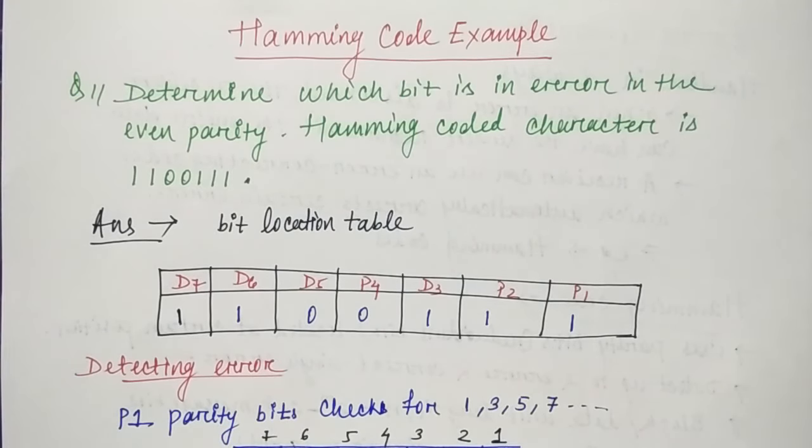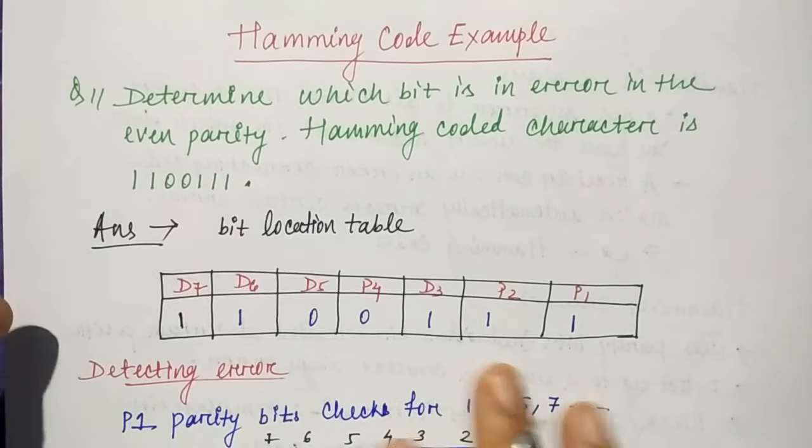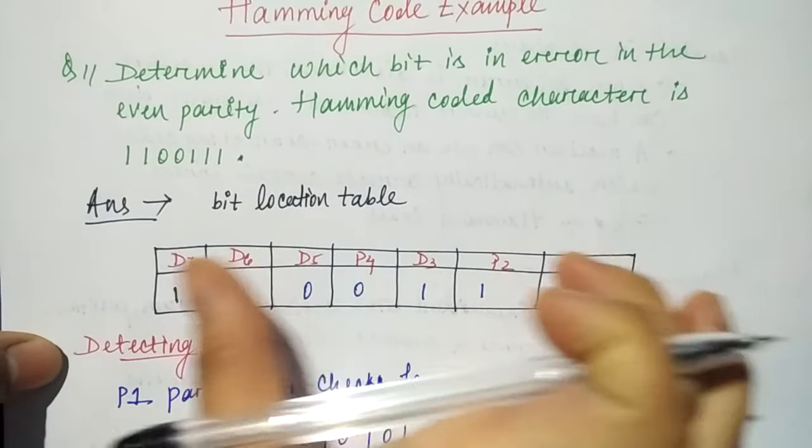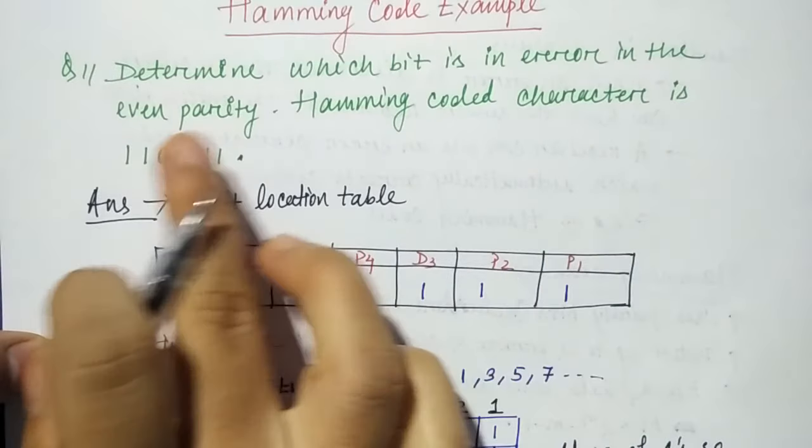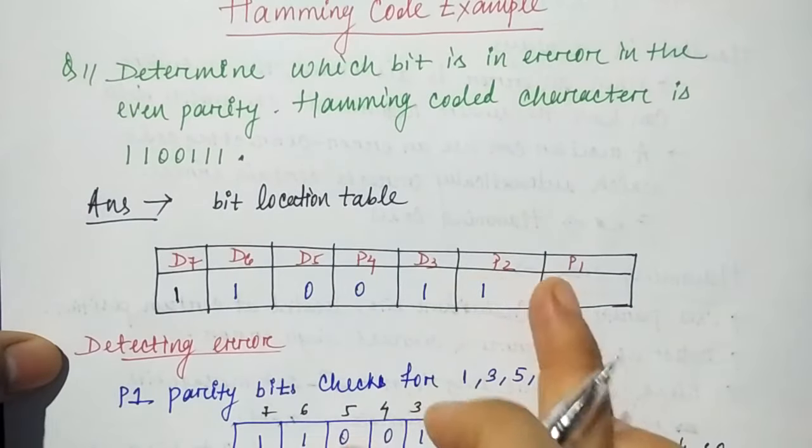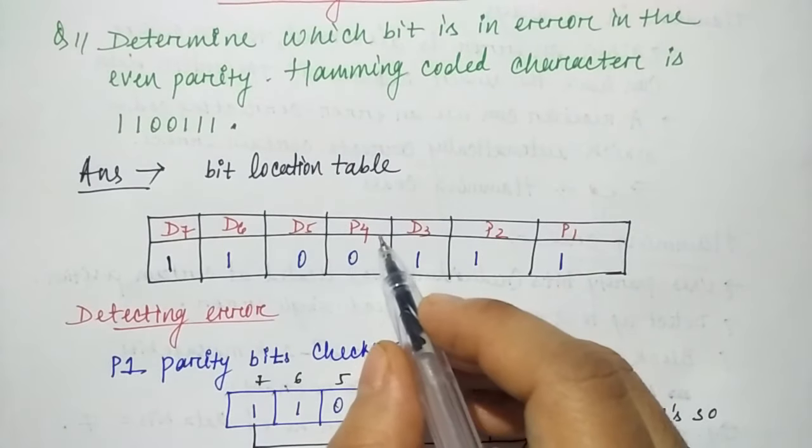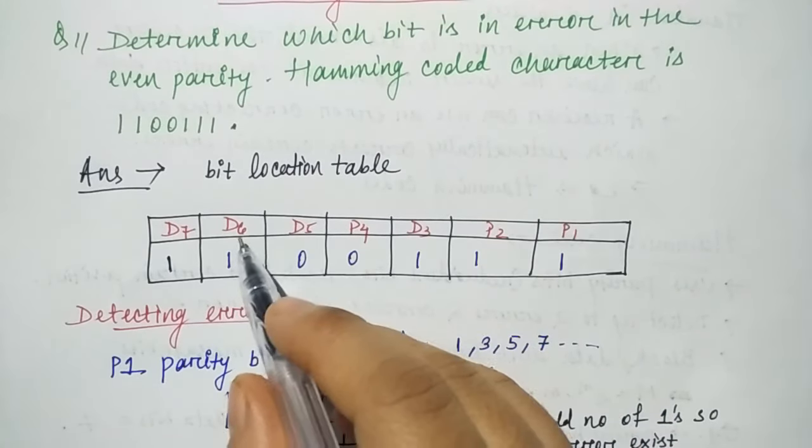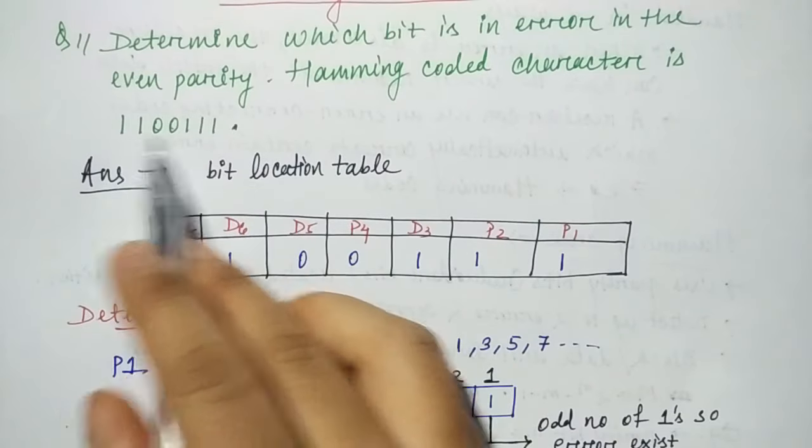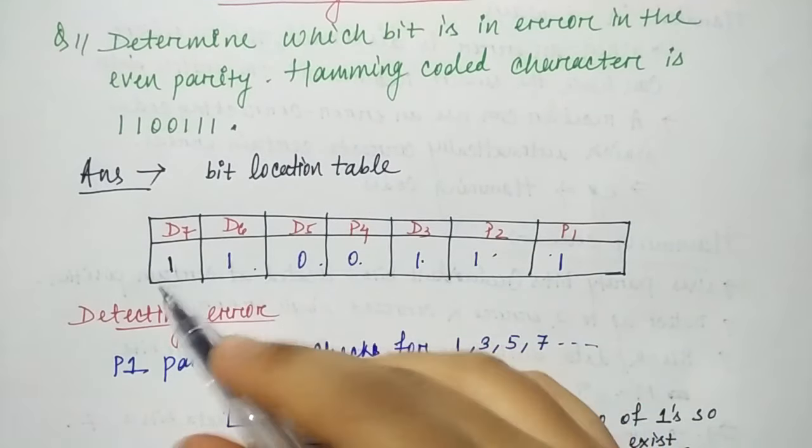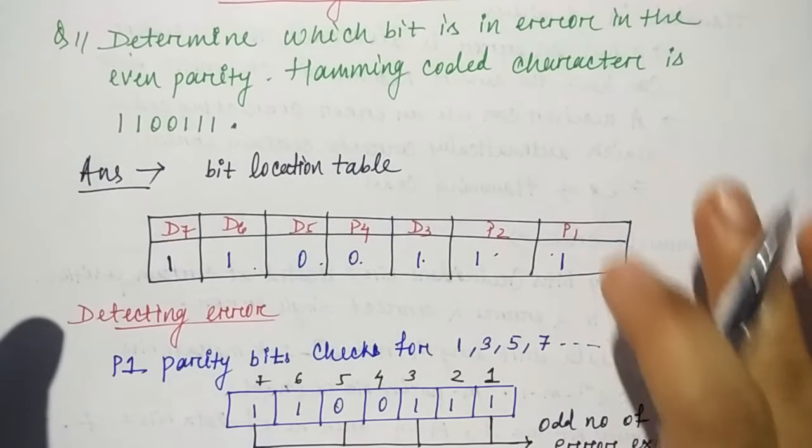Here you have a question in the even parity, and the Hamming code character is given. First, you have to make a bit location table. With the structure of Hamming code, you have to fill the given data in the required position. The structure is P1, P2, D3, P4, D5, D6, and D7. And the values are 1110011.